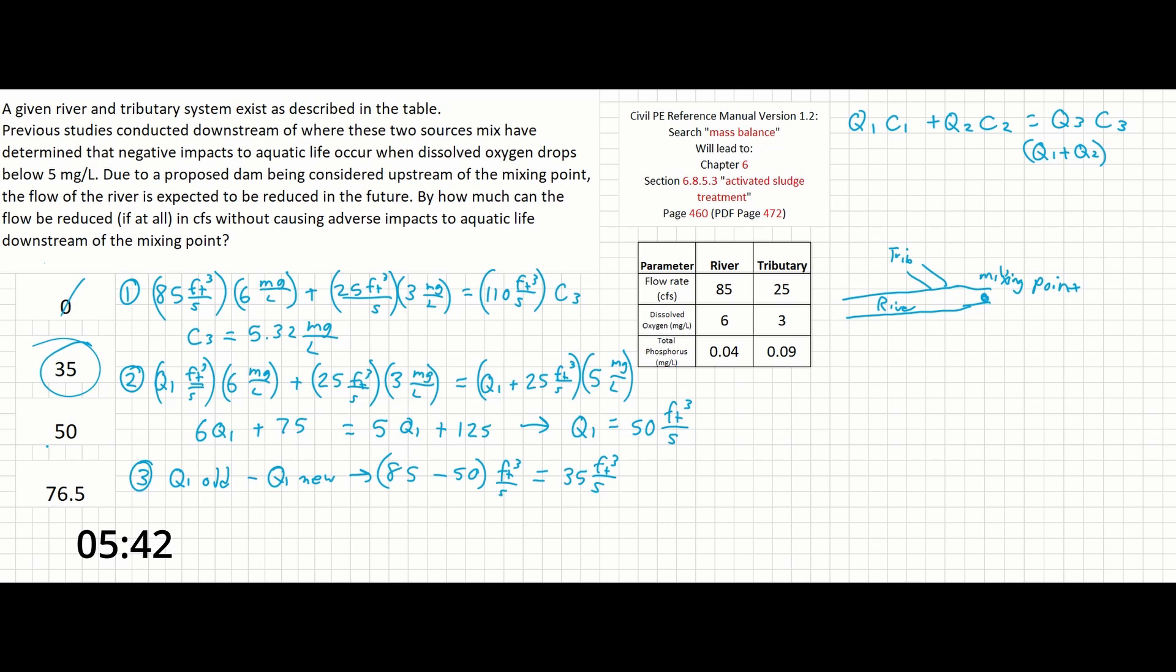If you divided 5.32 by 5 and then divided the flow of 85 by that percent, you would get something closer to 76.5. But again, we're looking for Q1 and the difference in these calculations is at the mixing point in Q3. Avoid those tricks by knowing where your locations of Q1, Q2, and Q3 are and you should be fine.